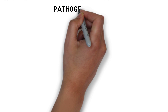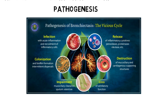In the pathogenesis, infection with acute inflammation and recruitment of inflammatory cells leads to release of inflammatory cytokines, peroxidases, proteinases, elastase, etc., which leads to destruction of mucociliary and cartilaginous supporting structures. This leads to loss of ventilatory function, impairment of mucociliary clearance, and sputum retention. This leads to colonization and biofilm formation, intermittent dispersal, which leads again to infection. This cycle is called the vicious cycle.